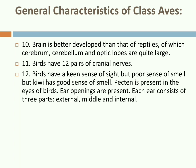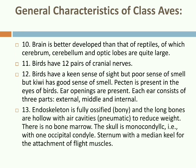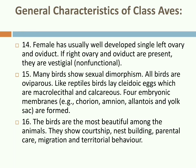The brain is better developed than that of reptiles; cerebrum, cerebellum, and optic lobes are quite large in size. Birds have 12 pairs of cranial nerves. Birds have a keen sense of sight but poor sense of smell — however, the kiwi has a good sense of smell. Pecten is present in the eyes of birds. Each ear consists of three parts: external, middle, and internal, like mammals. The endoskeleton is fully ossified and long bones are hollow with air cavities — called pneumatic bones — a modification to reduce weight for flight. There is no bone marrow; instead, bones are filled with air. The skull is monocondylic with one occipital condyle. The sternum has a median keel for the attachment of flight muscles.